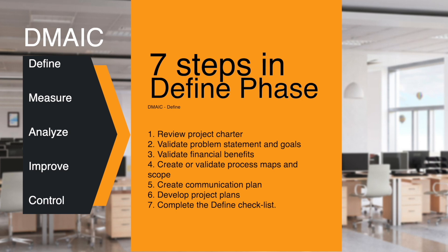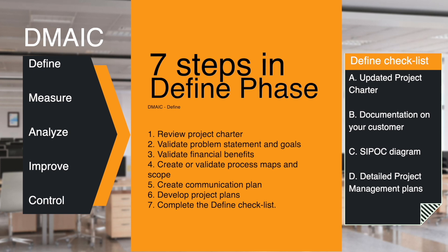There are four items on the checklist. Item A: An updated project charter consisting of a problem statement detailing when the problem occurred, what the problem is, the magnitude of the problem, and the impact of the problem. Focus only on symptoms, not solutions and causes.